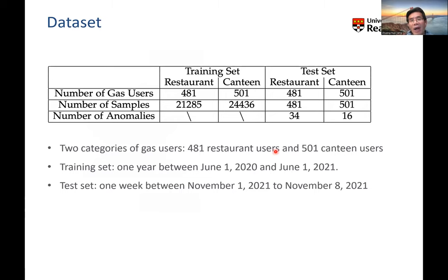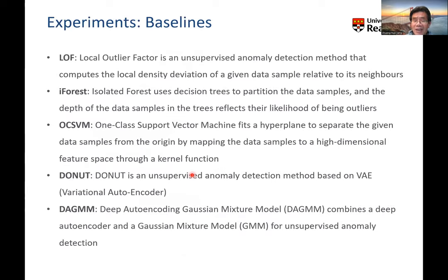For our experiment, we have three categories of users: restaurant and canteen. We separate the data into training and test sets. The total number of gas users is 481 for restaurants and 501 for canteens. We compare against several baselines: Local Outlier Factor, Isolation Forest, One-Class SVM, and deep autoencoder Gaussian mixture model.